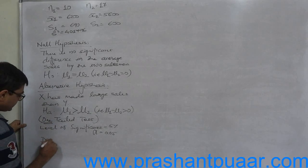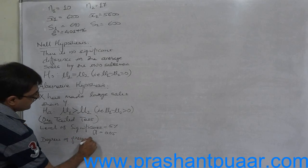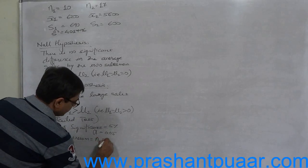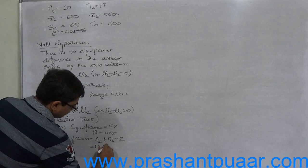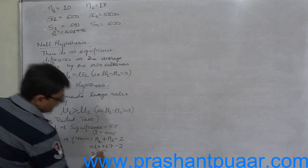Degrees of freedom: in this case there are two samples, so it is n1 minus 1 plus n2 minus 1. Simplified version is n1 plus n2 minus 2, that means 10 plus 17 minus 2, which equals 25.